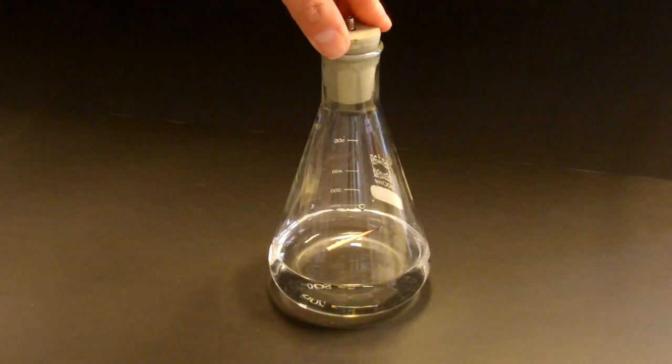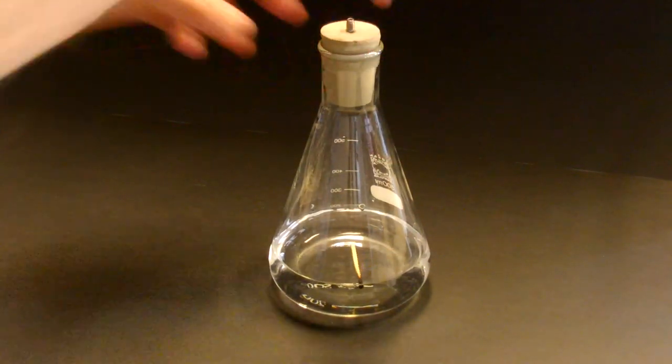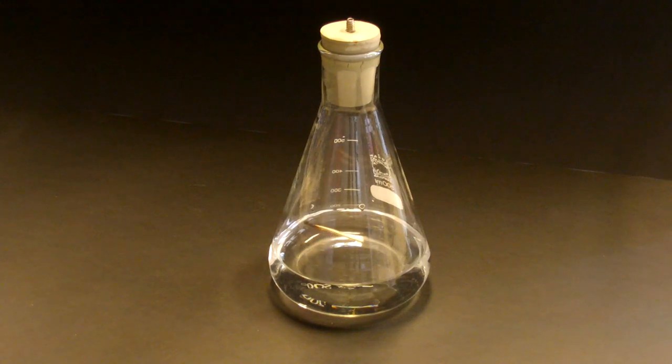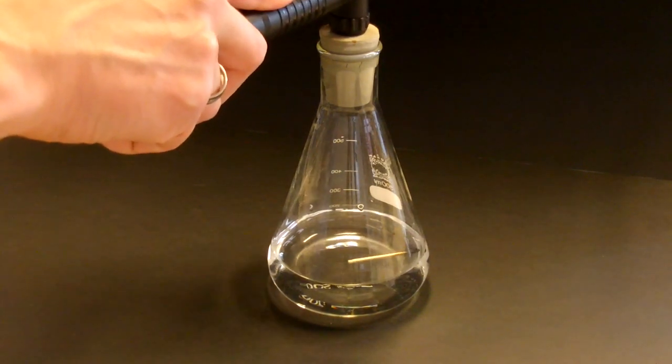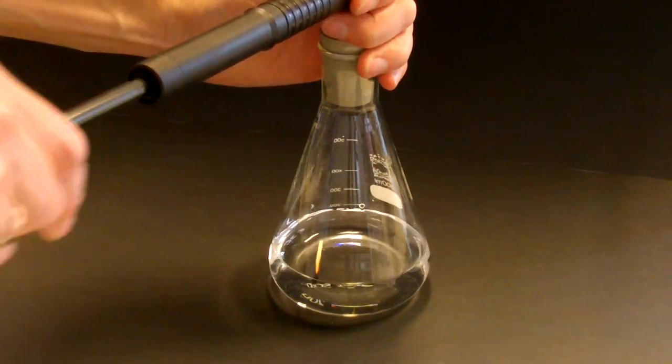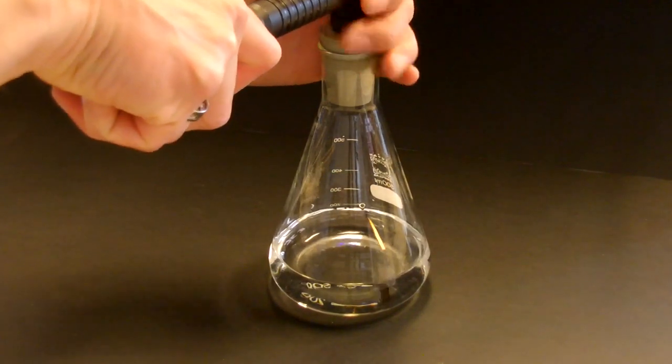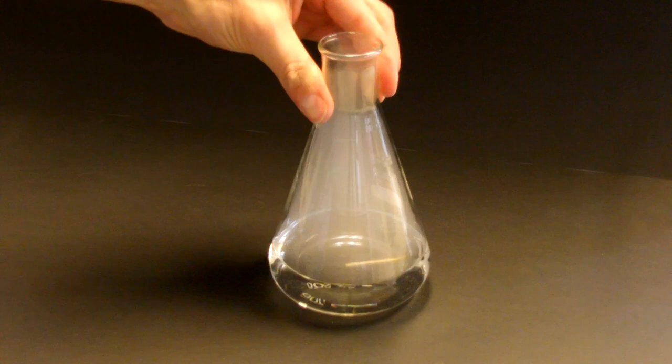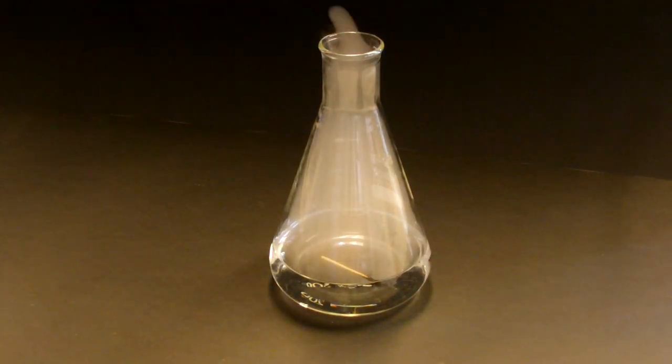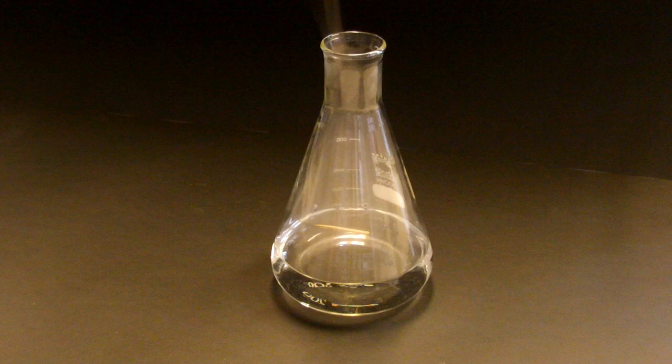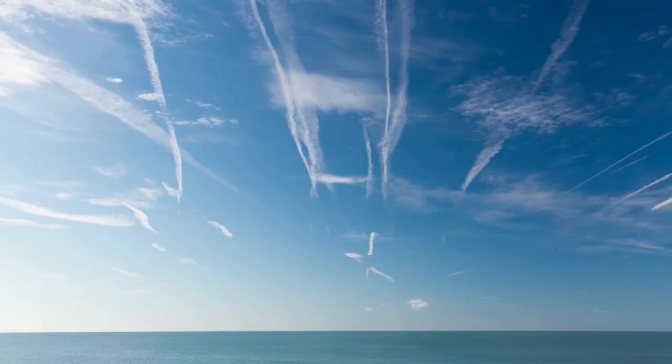Next I'll show you what happens if I light a match in the flask and repeat the experiment. Now you can clearly see a cloud has formed. That's because the air in the flask now contains a lot of soot from the burnt match. Although soot is small, it's large enough for the water to condense on. In the atmosphere, such particles are called condensation nuclei. And this same mechanism is how condensation trails from aircraft form.